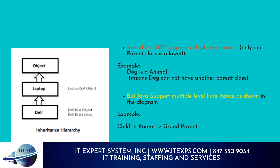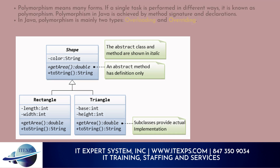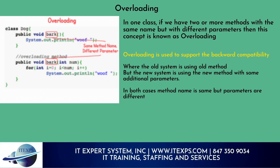What is polymorphism? Polymorphism means many forms — if a single task is performed in different ways, it is known as polymorphism. Polymorphism in Java is achieved by method signature and declarations. In Java, polymorphism is mainly two types: overloading and overriding. What is overloading? In one class, if we have two or more methods with the same name but different parameters, this concept is known as overloading. Overloading is used to support backward compatibility, where the old system uses the old method but the new system uses a new method with additional parameters.